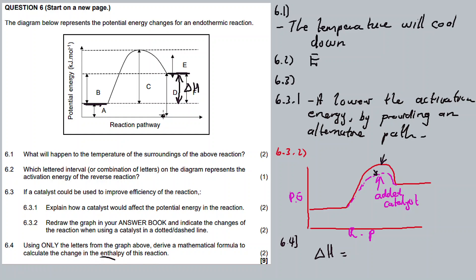From the graph: D is from zero all the way up to the products; A is from zero all the way up to the reactants. So D minus A gives you delta H. Alternatively, C minus E also gives you delta H. So the formula is: delta H = D − A, or equivalently C − E.